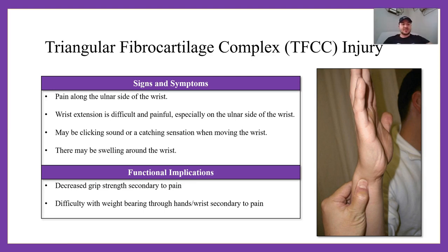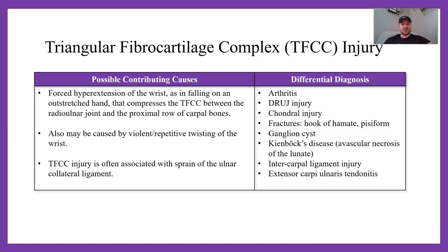Signs and symptoms: you're going to have pain along the ulnar side of the wrist. Wrist extension is difficult and painful, especially on the ulnar side. There may be clicking or catching sensation when moving the wrist, and swelling about the wrist. You'll have decreased grip strength secondary to pain, and difficulty with weight-bearing through the hands or wrist — especially the wrist in an extended position. Contributing causes include forced hyperextension from falling on an outstretched hand, and violent repetitive twisting of the wrist in racket sports, club sports, baseball, and softball.